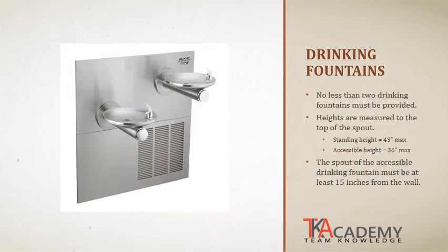For drinking fountains, no fewer than two are required — a higher one for standing users and a lower one for someone in a wheelchair. The standing height is 43 inches maximum, and the accessible height is 36 inches. The spout of the accessible drinking fountain must be at least 15 inches away from the wall to provide knee space for someone in a wheelchair to maneuver underneath and still reach the fountain. As noted earlier, drinking fountains cannot project into an accessible route more than four inches, so they are usually set back in an alcove space.